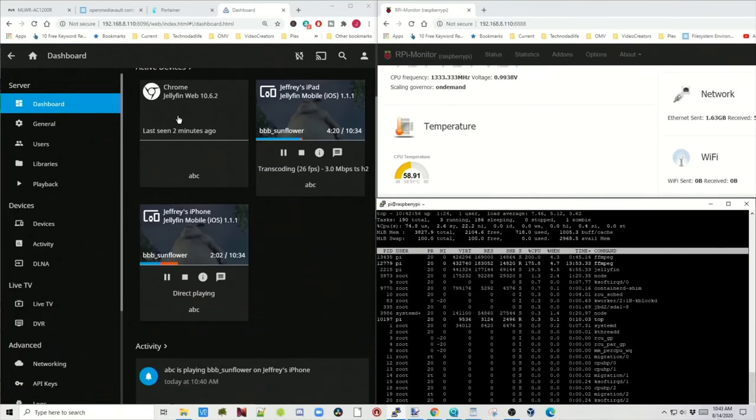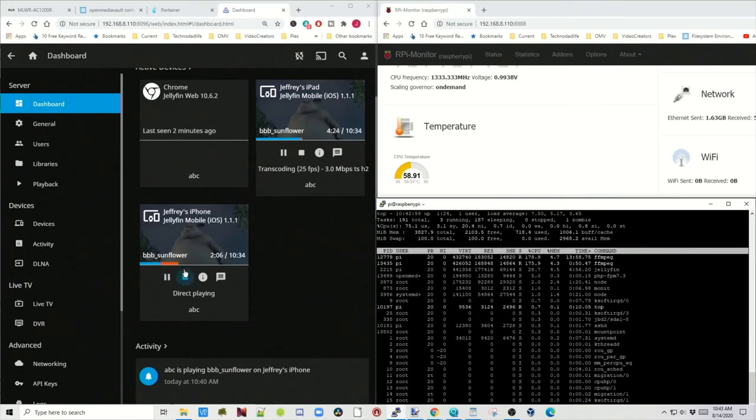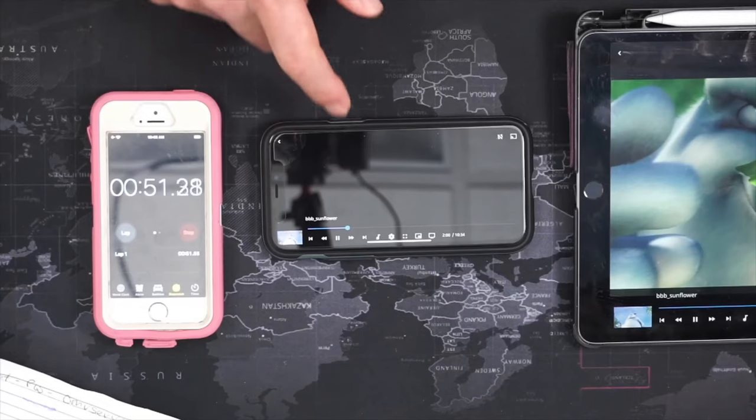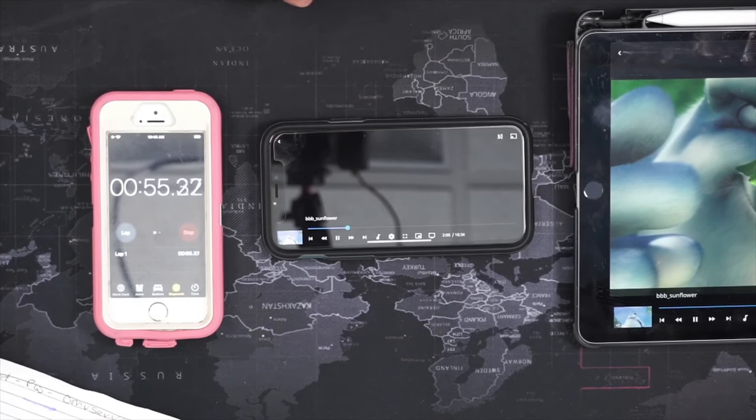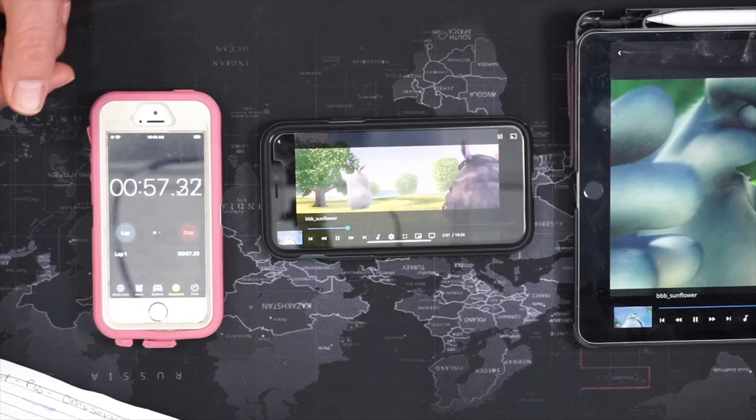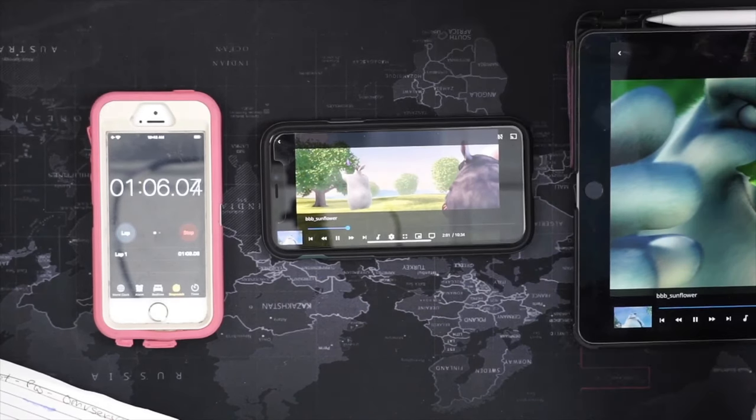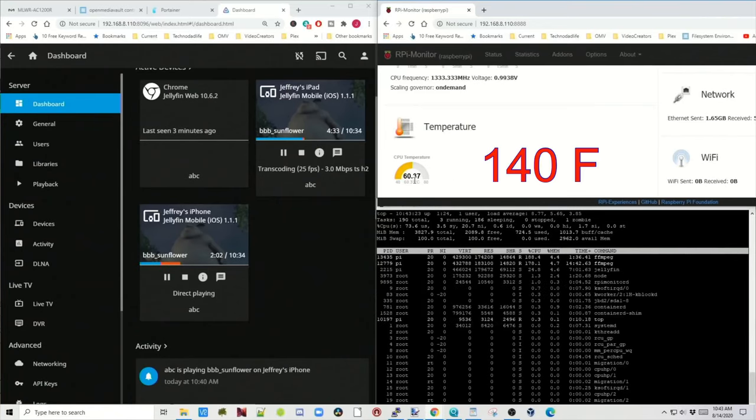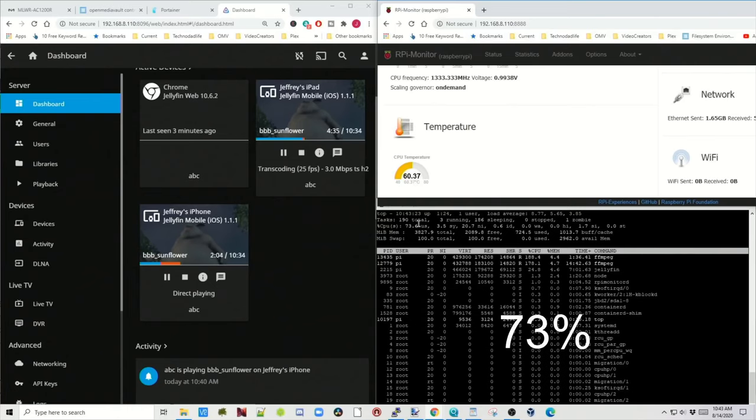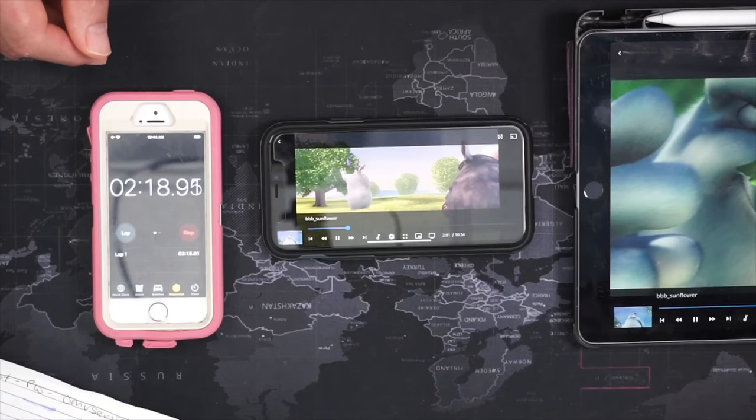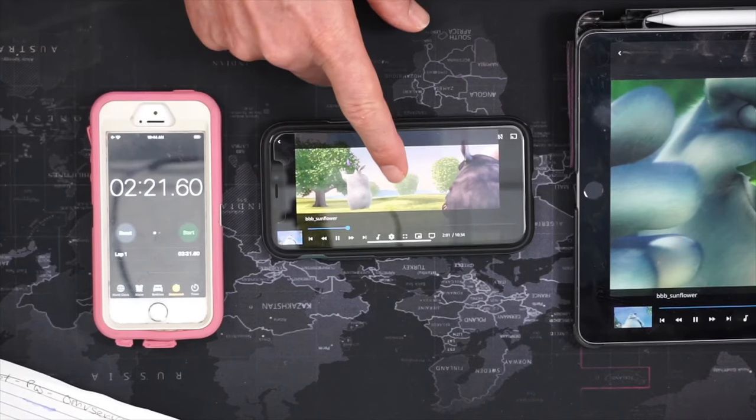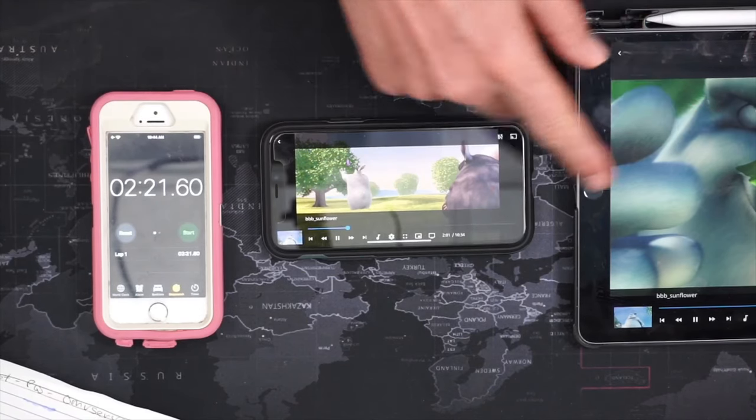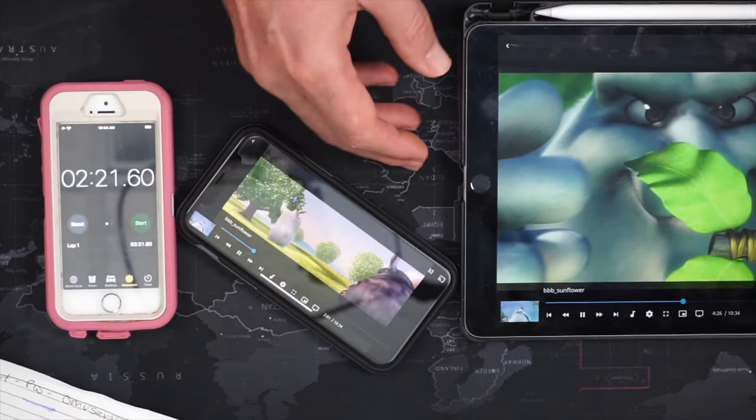If we look back into Jellyfin for monitoring, we can see it's transcoding that. Nothing though is happening on the screen here. Oh, there we have something, some life. Our temperature is up to 60 and our CPU usage 73.